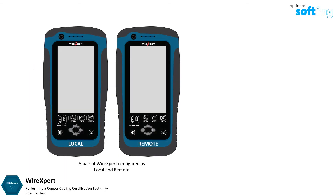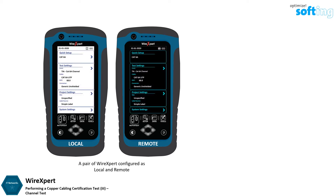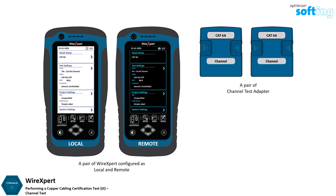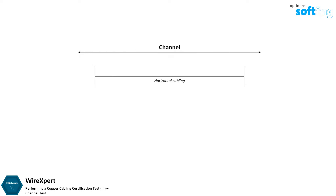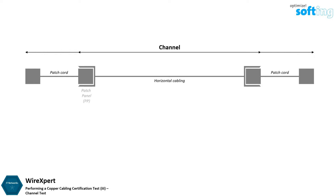You will require a pair of WireXpert units configured as local and remote, and a pair of channel test adapters. A channel typically consists of the permanent link and the patch cords used to connect from the patch panels and telecommunication outlets to the respective equipment.